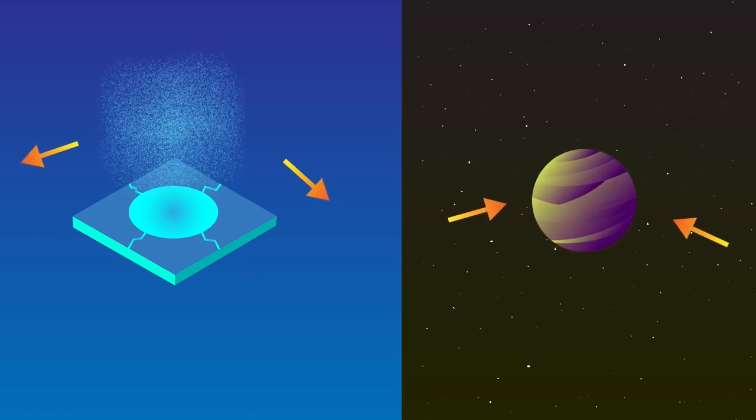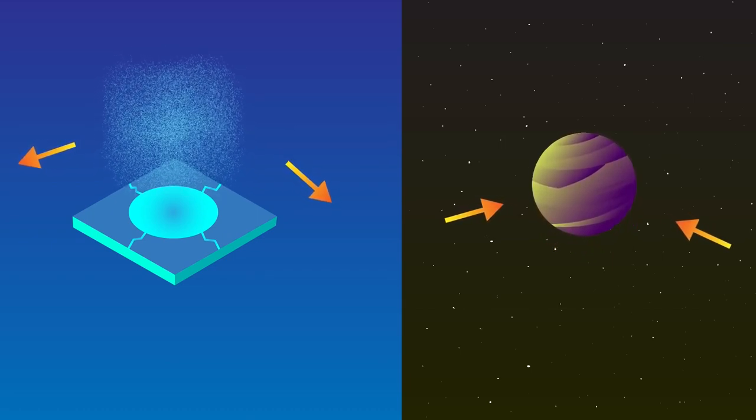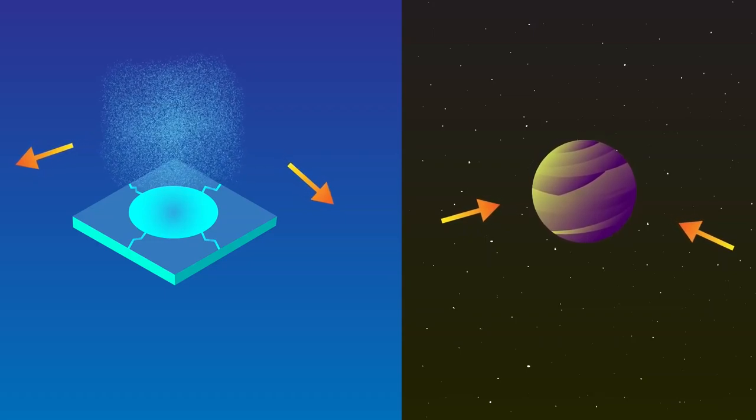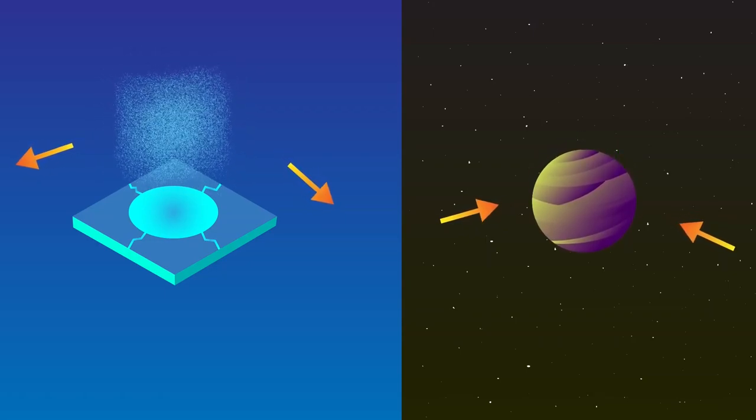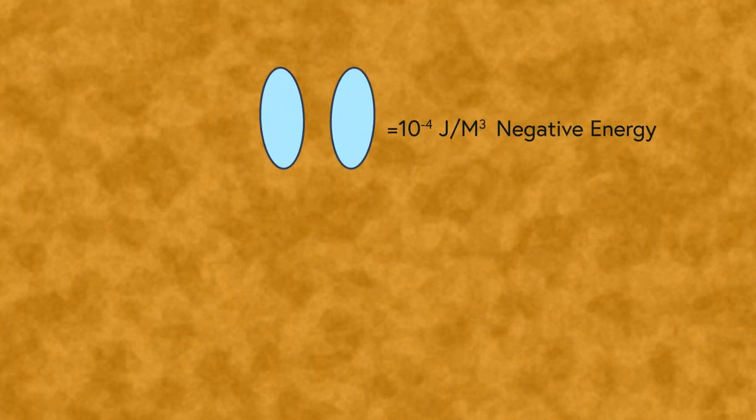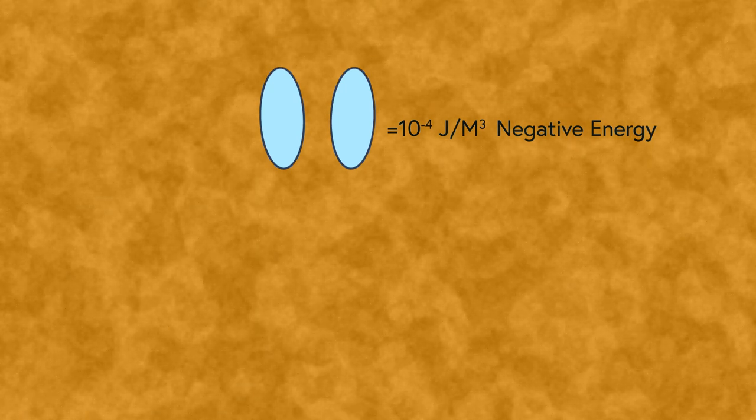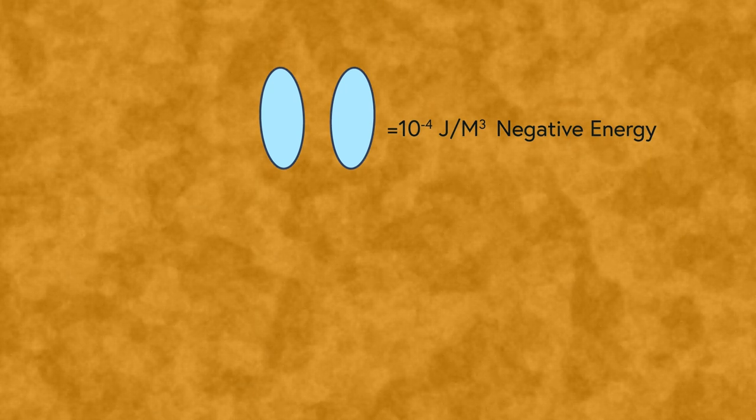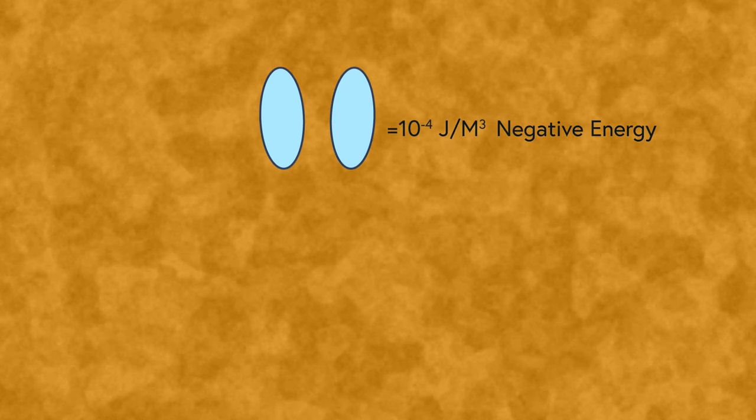This negative energy has a repulsive effect as opposed to the normal attractive gravitational pull of normal matter, which is why it can be used to keep a wormhole open. Now, that's all fine and dandy with just one small problem. This Casimir effect as mentioned would only produce about 10 to the negative 4 joules of energy per every cubic meter of space. This is a very insufficient amount to even stabilize a decent sized wormhole.